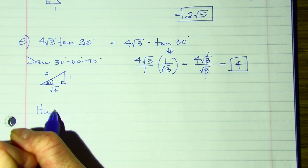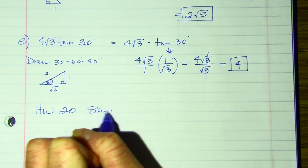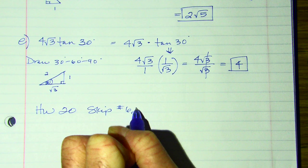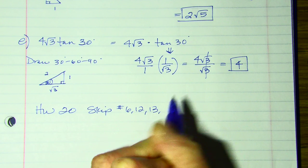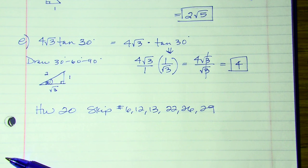In your homework for lesson 20, go ahead and skip numbers 6, 12, and 13, right? Because we skipped lots of sections, 22, 26, and 29. And that is it. We're going to see this all year.